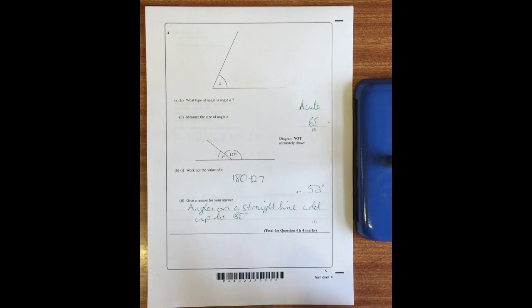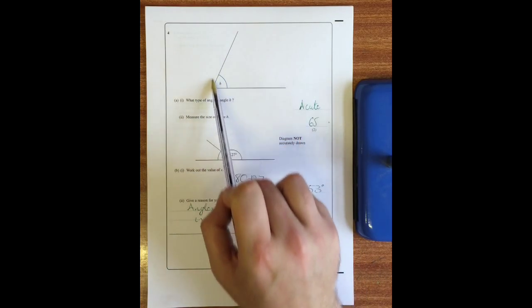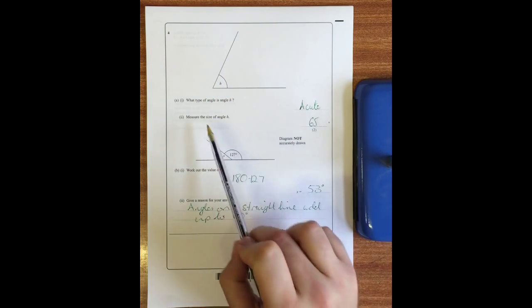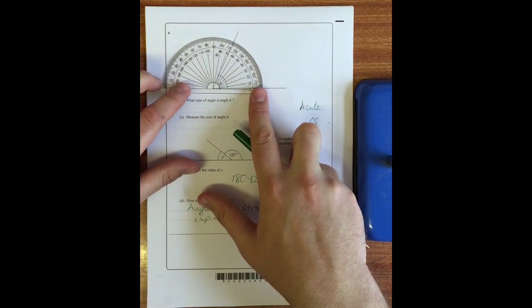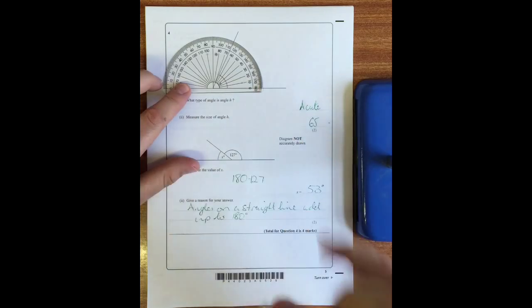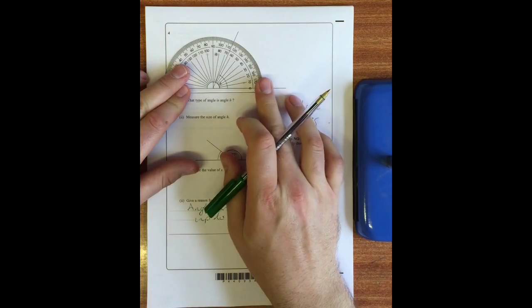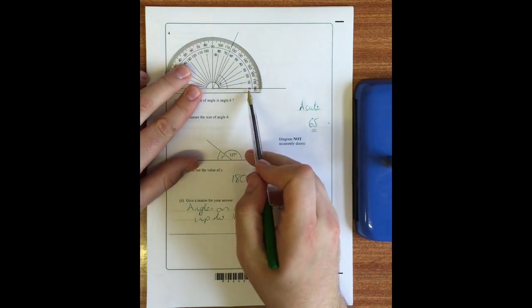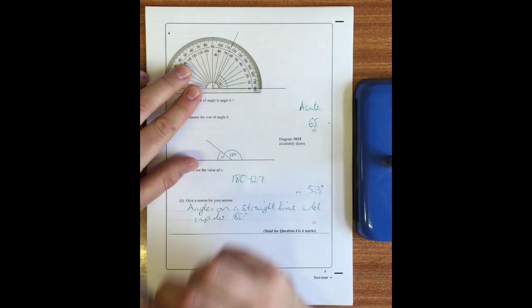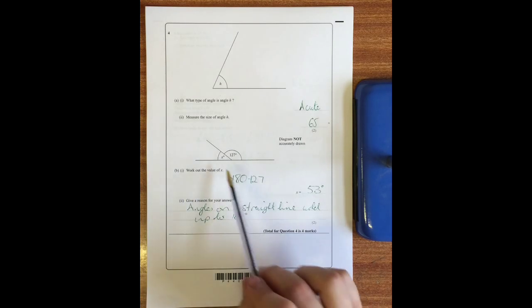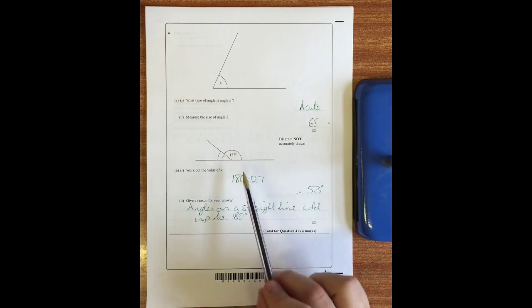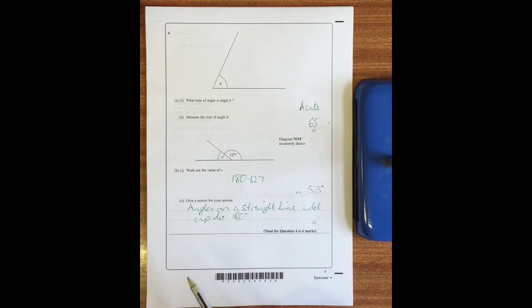Question four part one: what type of angle is H? Well it's less than 90 degrees so it's acute. Measure the size of angle H. For this you need a protractor - put the protractor crosshair at the corner of the shape, line up as accurately as you can, look from zero and go up and you'll see it's at 65 degrees. Part B: work out the value of x. Well we know that angles on a straight line add up to 180, so we do 180 take away 127 which is 53, and the reason for that is angles on a straight line add up to 180 degrees.